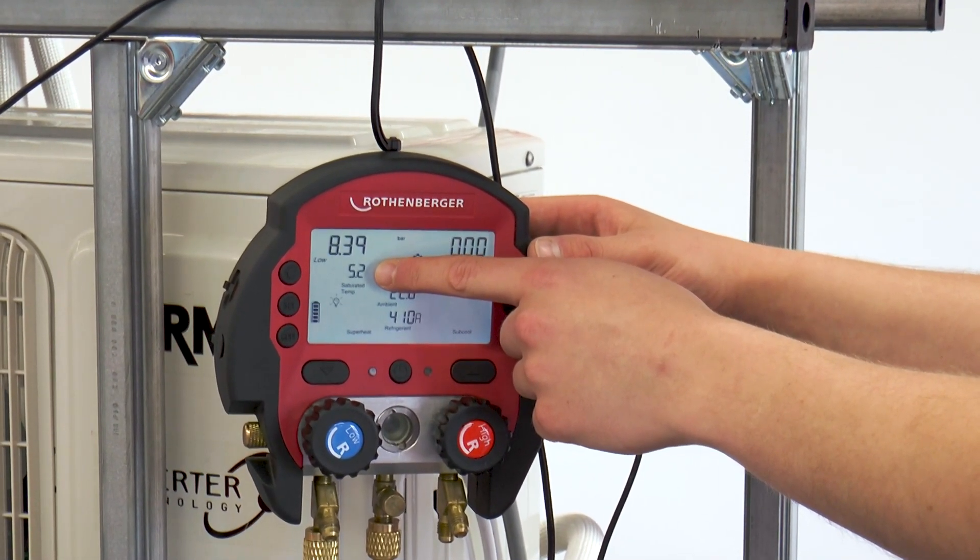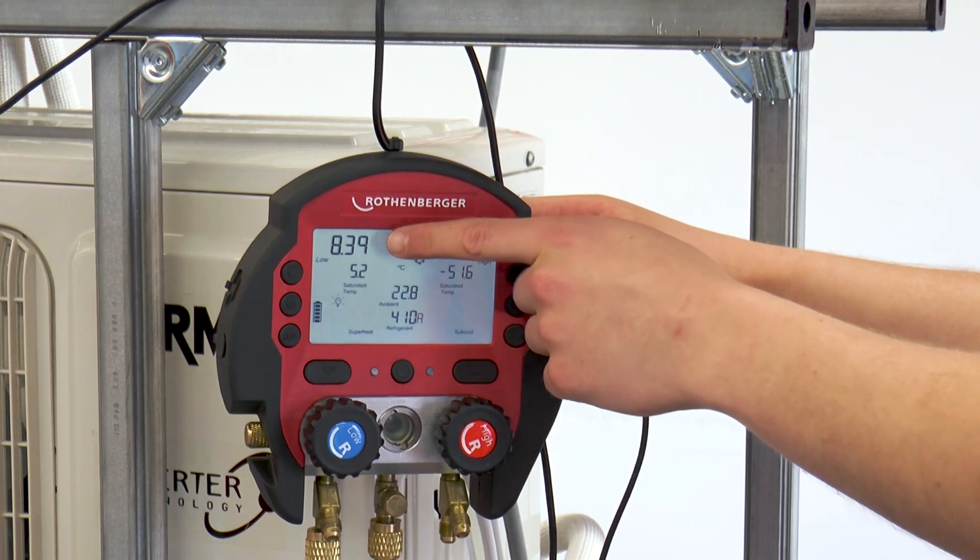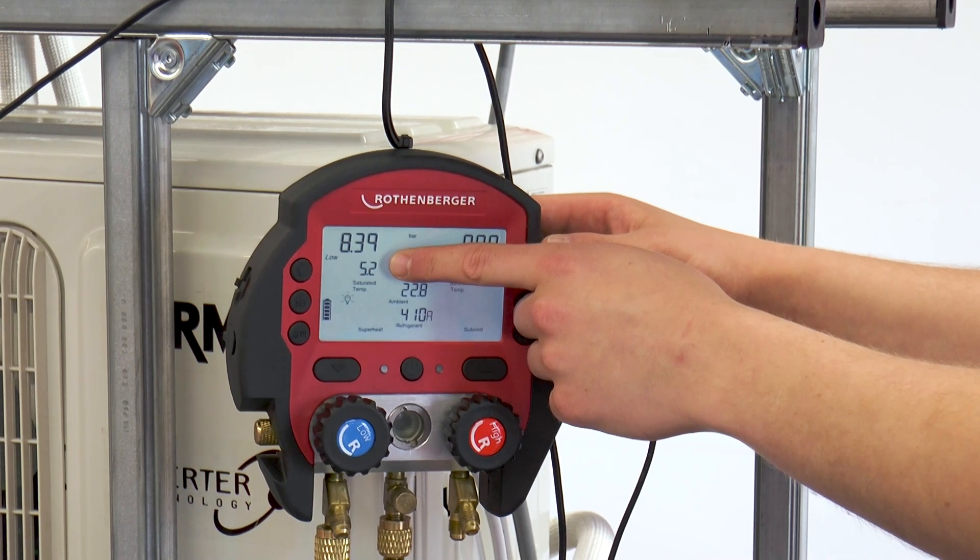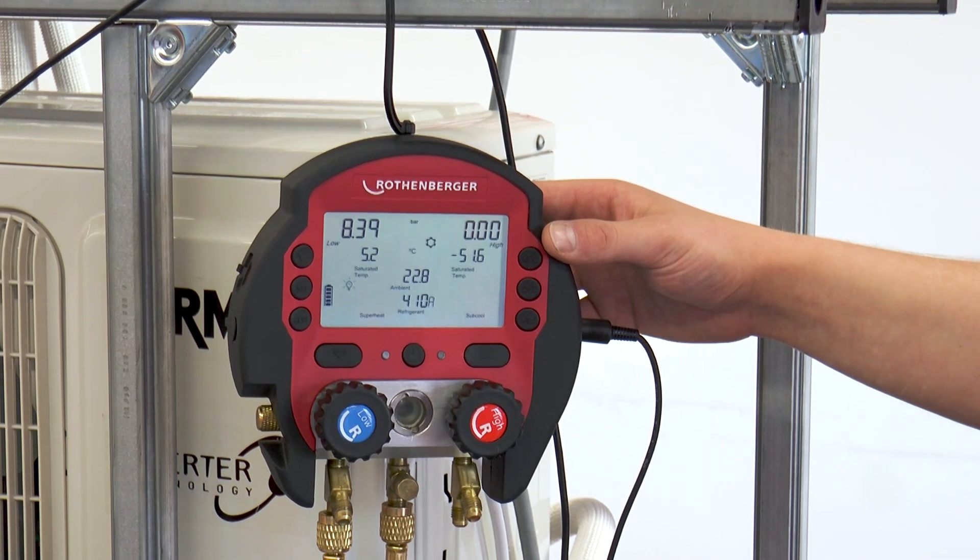And from this, the required test pressure for the leak test is derived. Here it can be seen that the refrigerant R410A is associated with a saturation temperature of 5.2 degrees Celsius at the pressure of 8.39 bar.